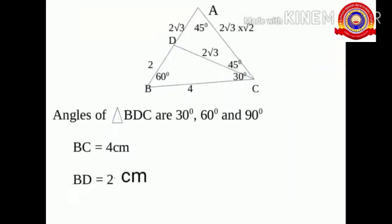The angles of triangle BDC are 30, 60, and 90 degrees. Given that BC is equal to 4 centimeters, therefore BD is equal to 2 centimeters and DC is equal to 2 root 3 centimeters.